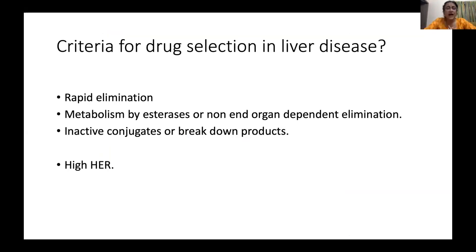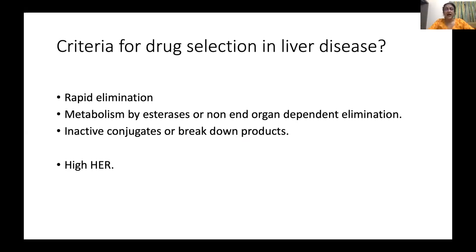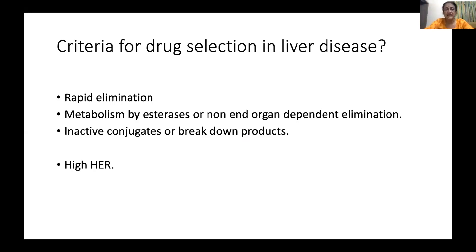If asked to choose drugs for a patient with liver disease, you would choose drugs with rapid elimination. That is why you choose propofol — there is no redistribution. Fentanyl or remifentanil is good because they are broken down by esterases. Atracurium or cisatracurium have organ-independent elimination. Another criterion is drugs metabolized without active conjugates. Diazepam and morphine have such prolonged half-lives that their duration of action is unpredictable and unsafe in patients with liver disease.